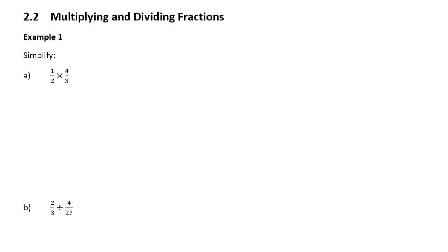Our previous video was on simplifying fractions, and what we learned is the most important thing: you cannot simplify a fraction until there's one term over one term. The only way to get one term over one term is to factorize. Now we're going to build on that and look into multiplying and dividing fractions. Our first two examples are basically primary school fraction examples of basic multiplying and dividing.